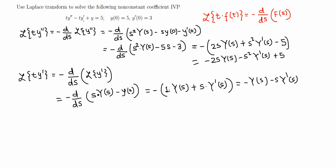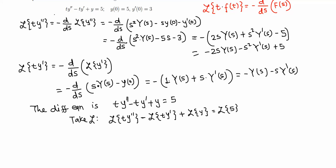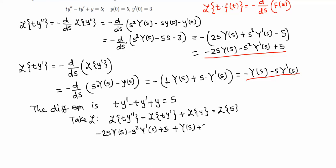Now let's assemble everything. The differential equation ty'' minus ty' plus y = 5 becomes, after taking Laplace transforms: L{ty''} minus L{ty'} plus L{y} = L{5}. Substituting what we found, this is: negative 2s·Y minus s²·Y'(s) plus 5, minus the quantity negative Y(s) minus s·Y'(s), plus Y(s).